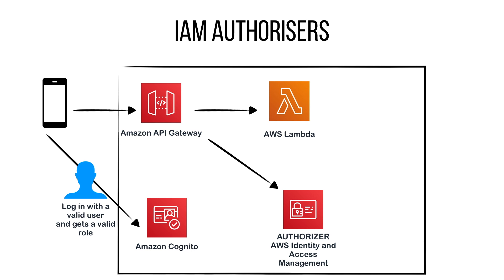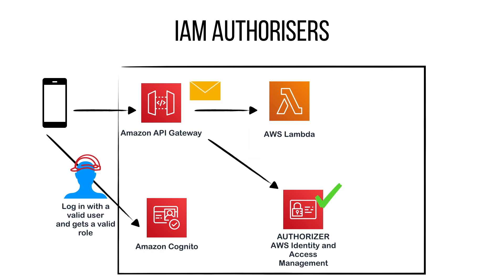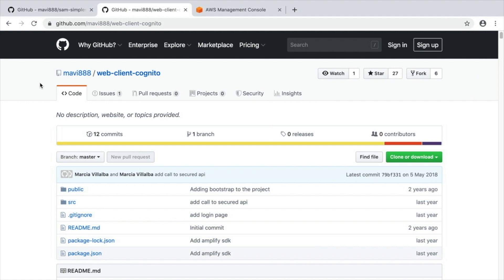We are going to create an API Gateway with an IAM authorizer, and if that authorizer passes, it will call the Lambda. For that we'll use Amazon Cognito user pools and identity pools. We create a user pool with a Cognito client — when a user logs in, they get a valid role from the Cognito identity pool. That role has a policy that allows invoking the API Gateway, so the call goes through.